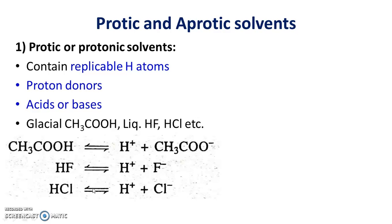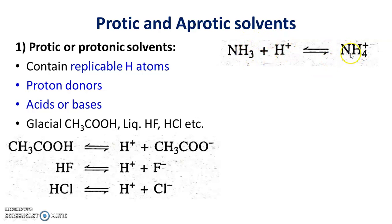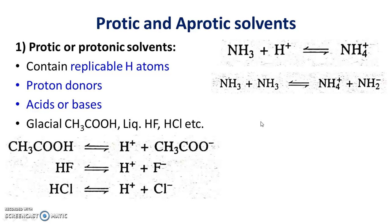The acceptor of a proton is also regarded as a protic or protonic solvent. For example, ammonia accepts a proton and produces NH4+, so it is also a protic solvent. Protonation occurs due to auto-ionization through the transfer of a proton from one ammonia molecule to another, forming a solvated proton NH4+ and a protonated anion NH2-. Therefore, ammonia is also a protonic solvent.